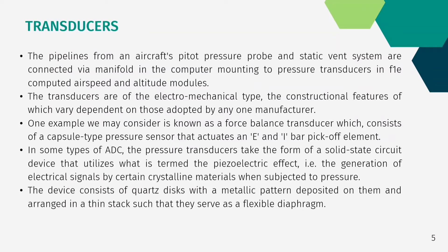The pipelines from an aircraft pitot pressure probe and static vent system are connected via a manifold in the computer mounting to pressure transducers in the computed air speed and the altitude modules. The transducers are of electromechanical type, the constructional features of which vary dependent on the manufacturer. One example is known as a force balance transducer, which consists of a capsule type pressure sensor that actuates an E and I bar pickoff element.